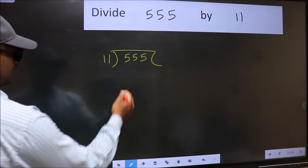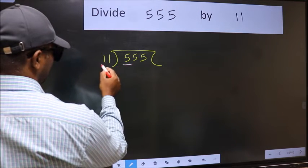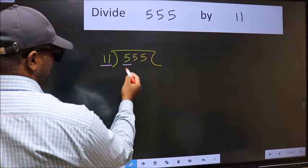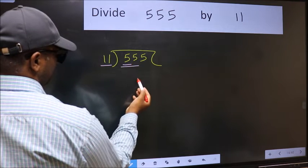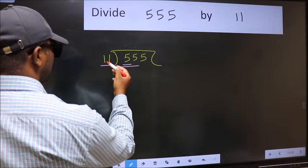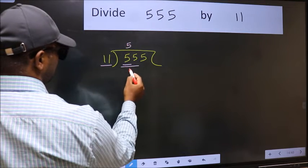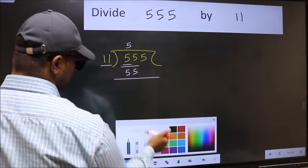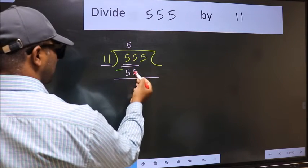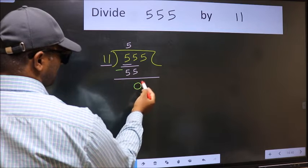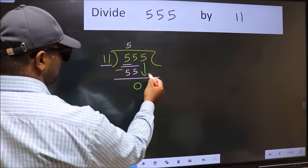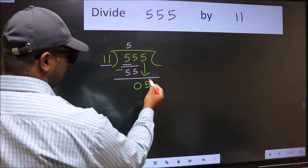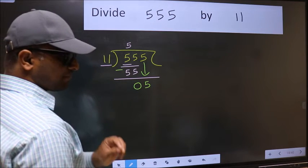Next. Here we have 5 and here 11. 5 is smaller than 11, so take two numbers, 55. When do we get 55 in 11 table? 11 times 5 is 55. Now you should subtract. 55 minus 55 is 0. After this, bring down the beside number, so 5 down. After this step, the mistake happens.